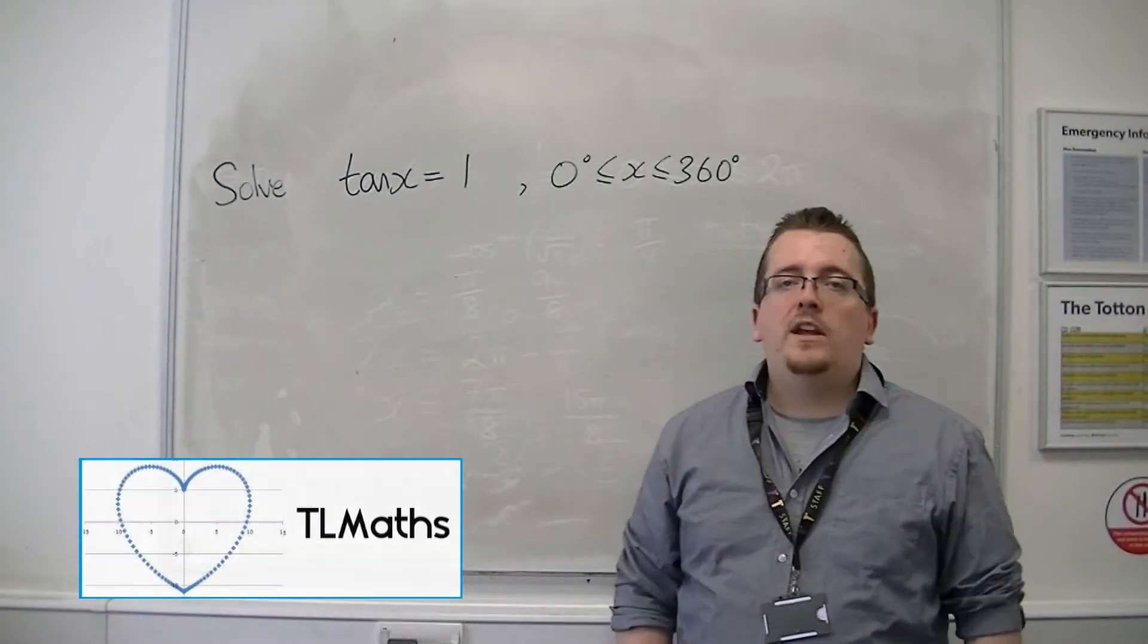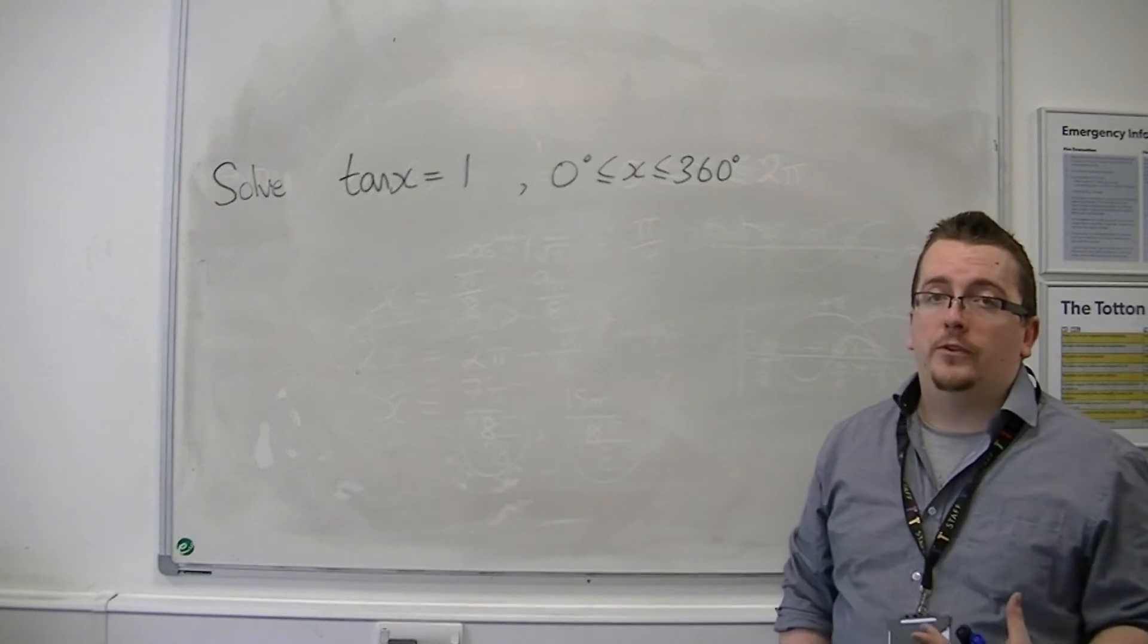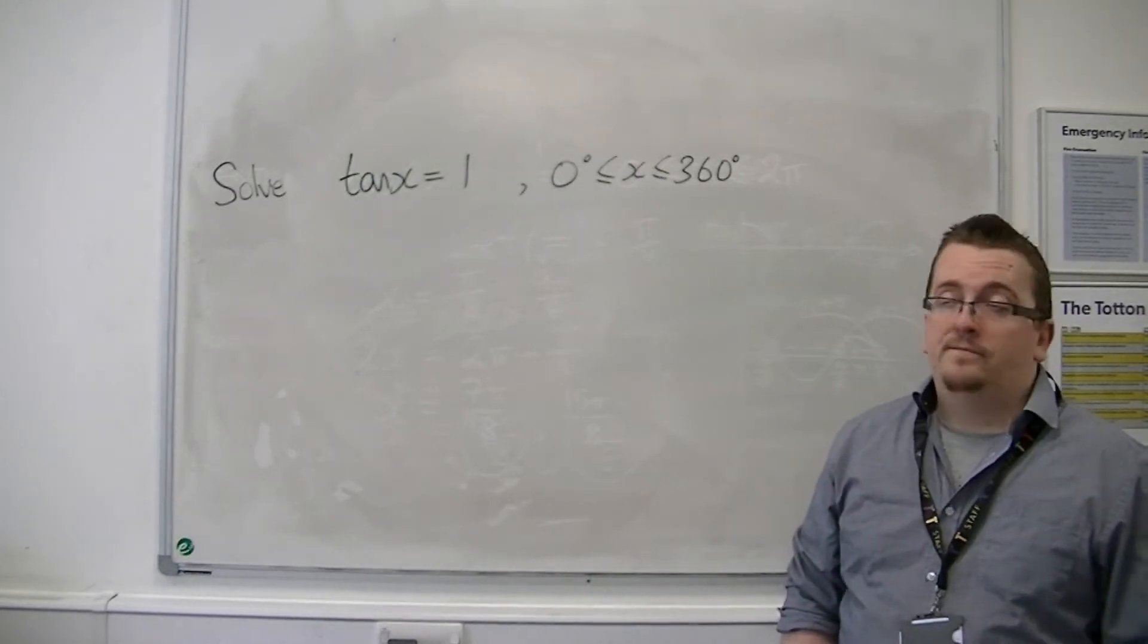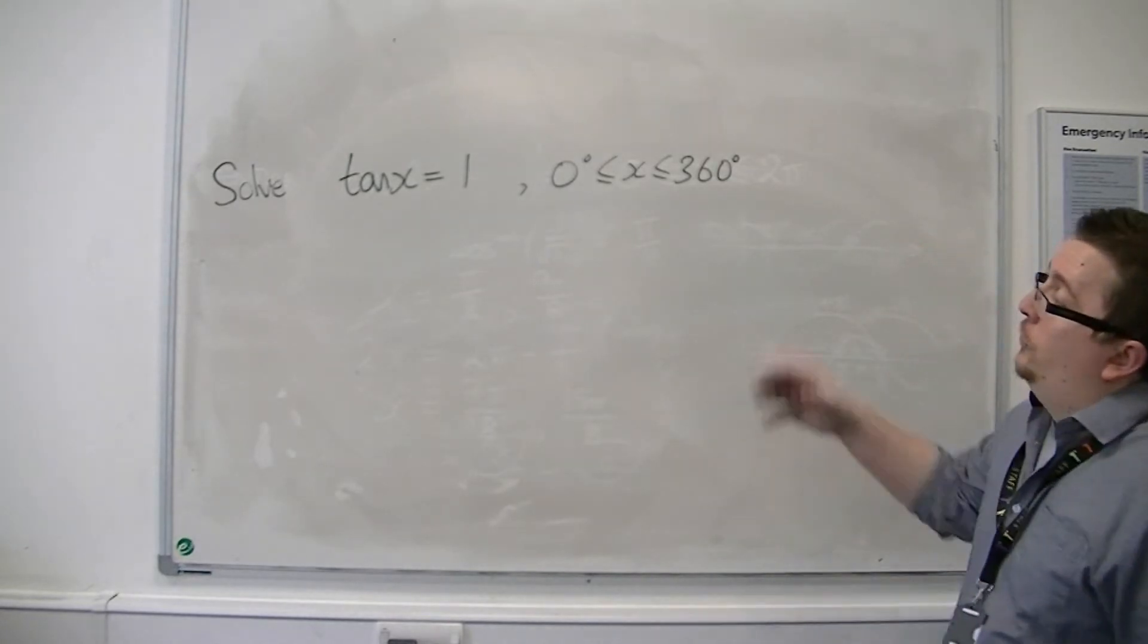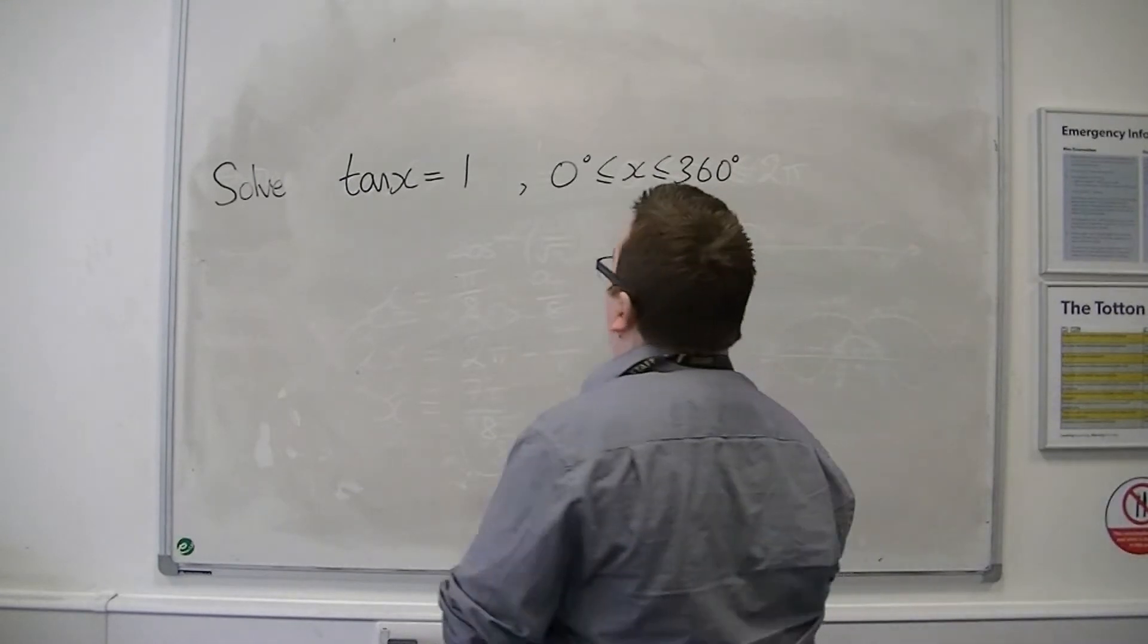In the previous two videos I showed you how to solve equations with sine and cosine as recap videos. In this one we're going to do tan. So we've got solving tan x equals 1 between 0 and 360. A very simple trig equation.